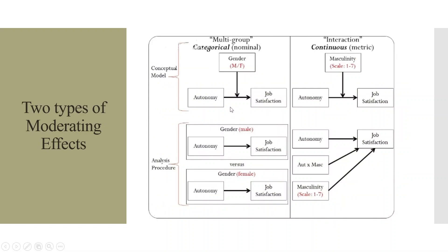Let's talk about this relationship. Autonomy affects job satisfaction. But is this effect the same in male and female? Here, gender is a categorical variable, also known as a nominal variable. So we will use multi-group analysis, meaning we test the effect of autonomy on job satisfaction separately for male and female.